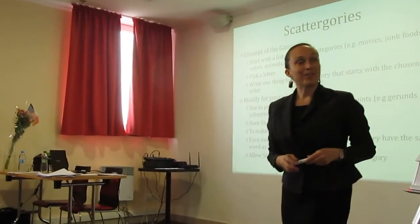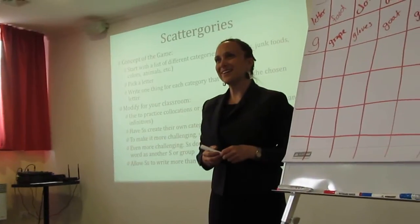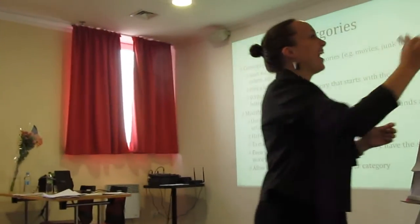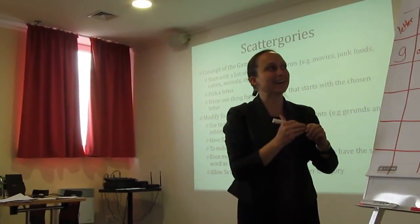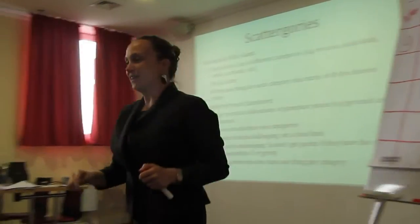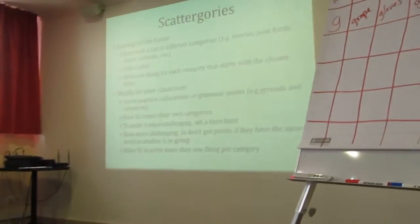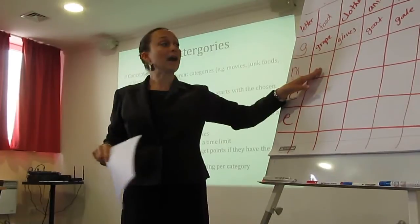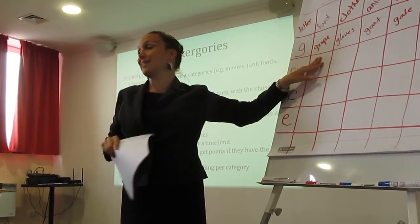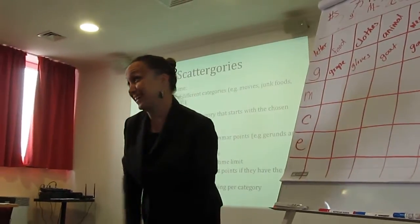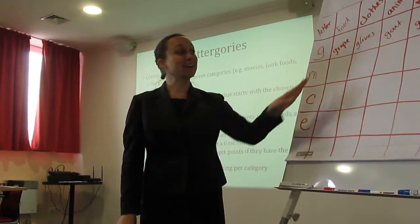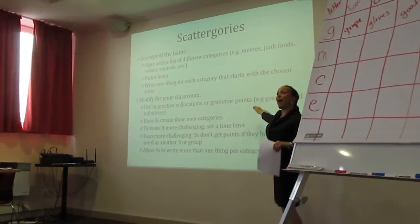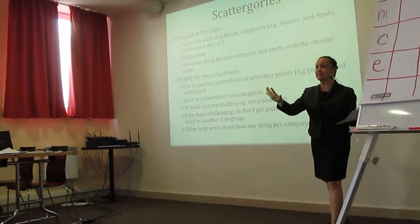The number 13 corresponds to a specific letter. You have one minute to make a list using that letter for all categories — for example, foods starting with M. You're reviewing vocabulary at the same time. The student who has an answer nobody else has gets a point, and the player with the most points wins.